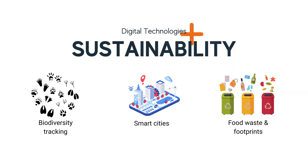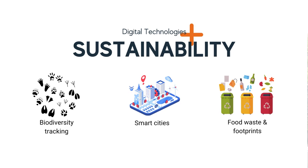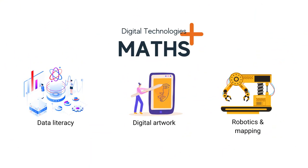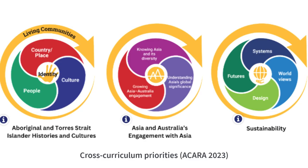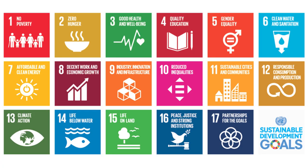With the modules, we've got some exciting topics like sustainability with biodiversity tracking, smart cities, food waste and footprints. We've got Maths, which includes data literacy, digital artwork, robotics and mapping. And digital technologies and English, which includes languages, storytelling and digital literacy. Our course unpacks core concepts and the cross-curriculum priorities in Aboriginal and Torres Strait Islander histories and cultures, Australia's engagement with Asia and sustainability from the Australian Curriculum as ways for embracing authentic problem solving and context for teaching and learning.